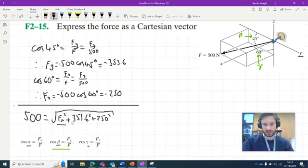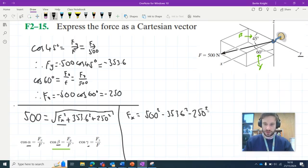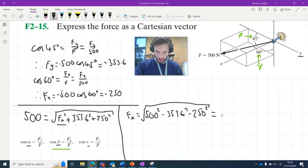We can rearrange for Fx by squaring both sides, subtracting 353.6 squared and 250 squared, then taking the square root. So Fx equals the square root of 500 squared minus 353.6 squared minus 250 squared. When we calculate this, we find it equals 250.